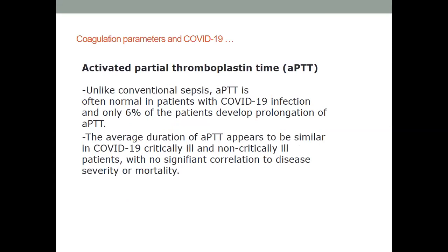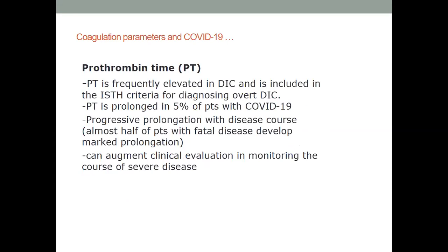Activated partial thromboplastin time (aPTT), unlike in conventional sepsis, is often normal in patients with COVID-19 infection; only 6 percent of patients develop prolongation of aPTT. Prothrombin time is frequently elevated in standard bacterial sepsis and is part of the ISTH diagnostic criteria for DIC, with progressive prolongation as disease progresses. Almost half of patients with fatal disease developed marked prolongation, but by itself it cannot detect changes that should modify treatment.